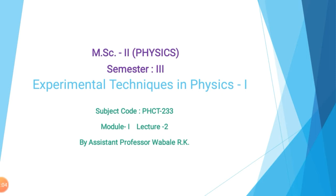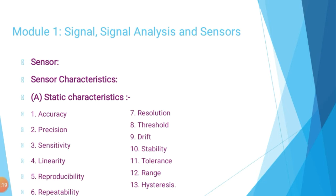To describe the performance of a sensor, we need different parameters. There are 13 total parameters: first is accuracy, second is precision, third is sensitivity, fourth is linearity, fifth is reproducibility, sixth is repeatability, seventh is resolution, eighth is threshold, ninth is drift, tenth is stability, eleventh is tolerance, twelfth is range, and thirteenth is hysteresis. These 13 parameters help us describe the performance of the sensor.